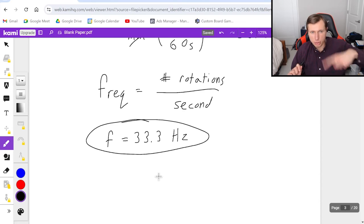So in other words, your engine is making 33 cycles, 33 circular motions, every second, that's really fast.